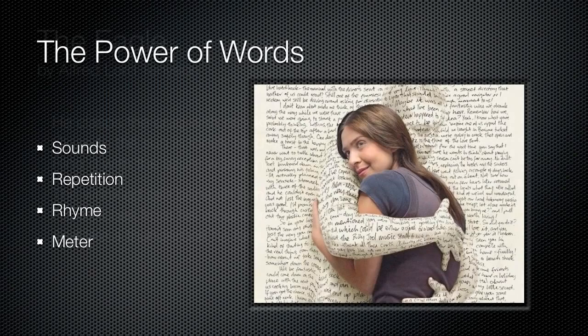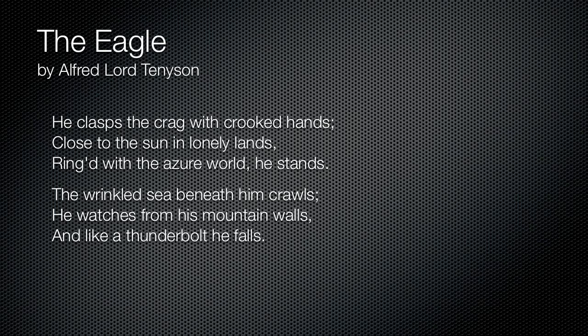We're going to begin by looking at a poem by Alfred Lord Tennyson called The Eagle. "He clasps the crag with crooked hands, close to the sun in lonely lands, ringed with the azure world he stands. The wrinkled sea beneath him crawls, he watches from his mountain walls, and like a thunderbolt he falls."